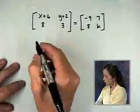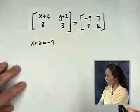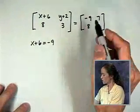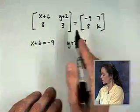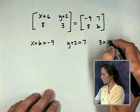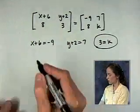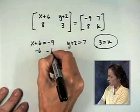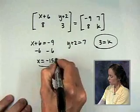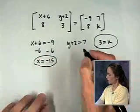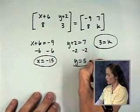We're going to set X plus 6 equal to negative 9, Y plus 2 equal to 7, and 3 equal to K. We already have part of our answer. For X, subtract 6 to get X is negative 15. For Y, subtract 2 to get Y is equal to 5.